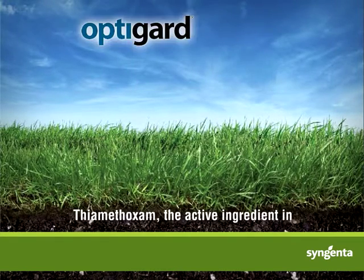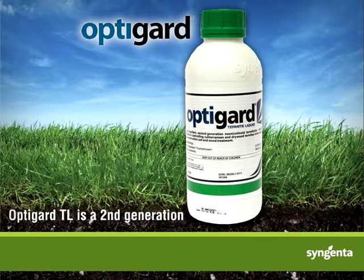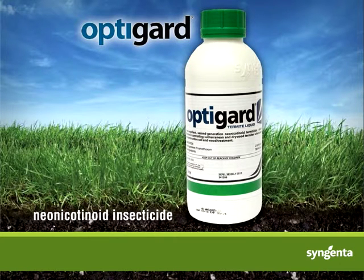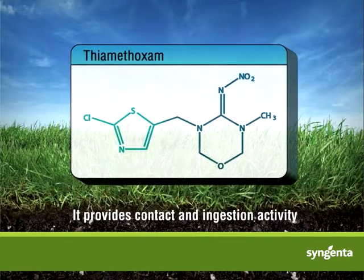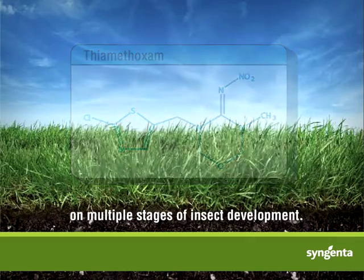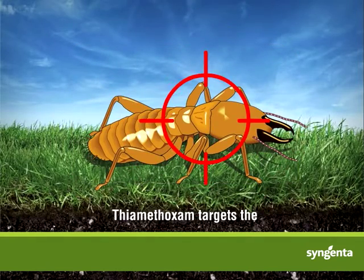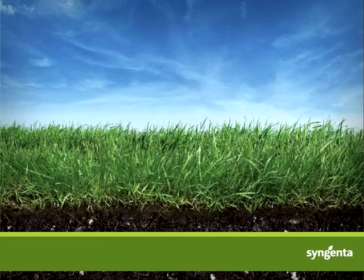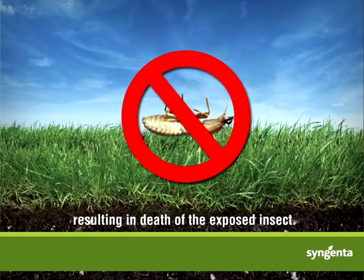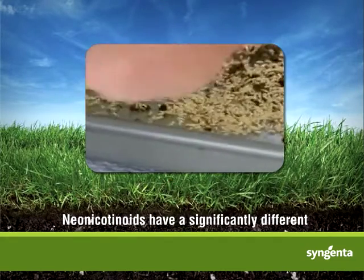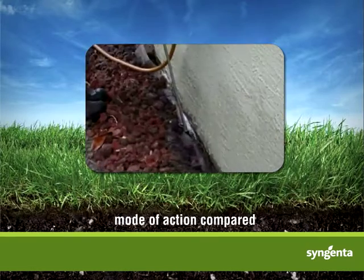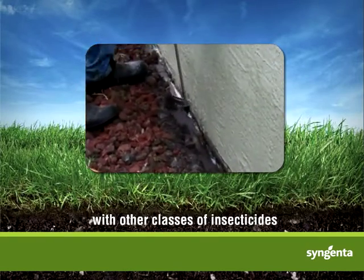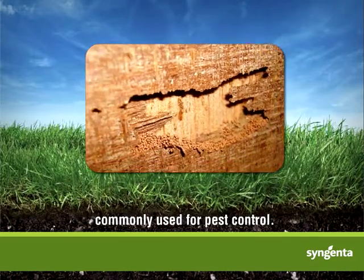Thiamethoxam, the active ingredient in Optigar TL, is a second-generation neonicotinoid insecticide that belongs to the thianicotinil subclass. It provides contact and ingestion activity in multiple stages of insect development. Thiamethoxam targets the nicotinic acetylcholine receptors in the insect's nervous system, resulting in death of the exposed insect. Neonicotinoids have a significantly different mode of action compared with other classes of insecticides commonly used for pest control.